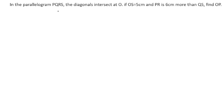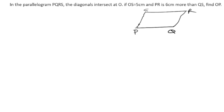In the parallelogram PQRS, they have given the parallelogram, so let us draw a rough diagram. The diagonals intersect at O. So this is the parallelogram, and P to R is one diagonal, and S to Q is the other diagonal, which cut each other at O.